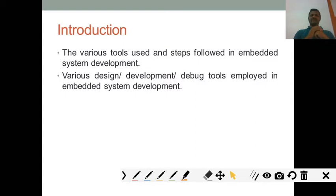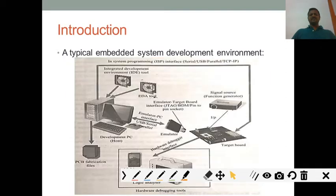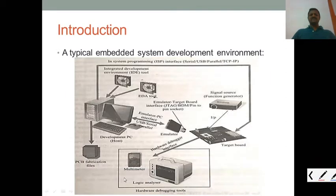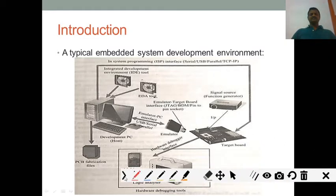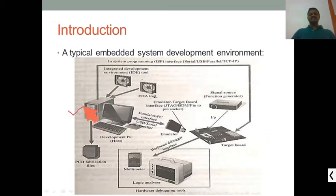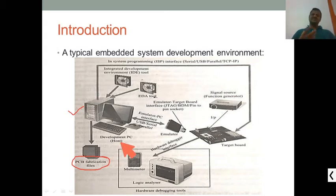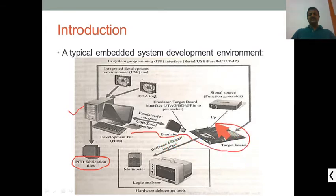Various techniques and tools are used for the design and development of embedded systems, but how you properly use them for debugging is important. This typical diagram shows the development environment and what is included in it: the target PC, PCB fabrication — since most embedded systems use a PCB — and serial communication between the emulator. If you want to debug the target board, an emulator is used. The host machine comes with an EDA tool and IDE.